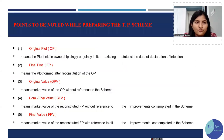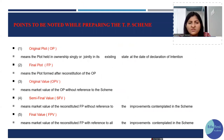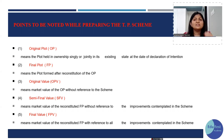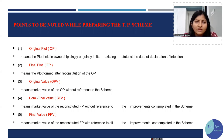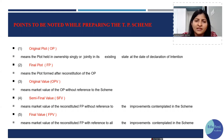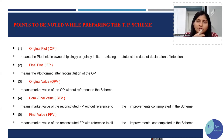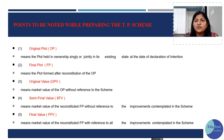Section 64 introduces key concepts: original plot (OP), final plot (FP), semi-final value, and final value. The original plot is the irregular-shaped plot existing before the date of declaration. After reconstitution, whatever plot is made is the final plot. The original plot value is calculated by multiplying the area by the value to get the market value of the OP. Semi-final value is calculated without reference to improvements; final value is calculated with improvements.